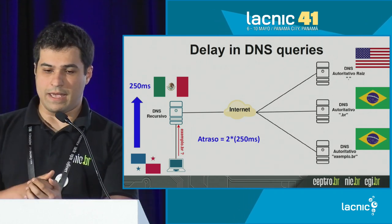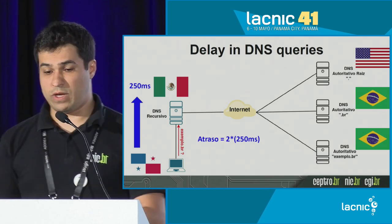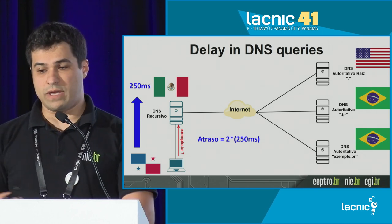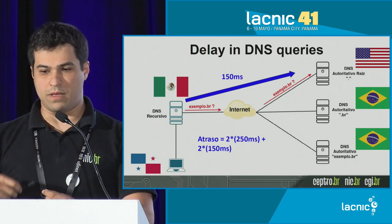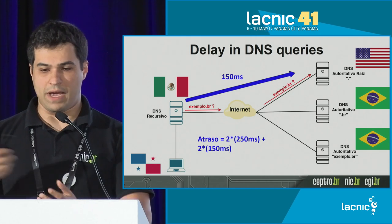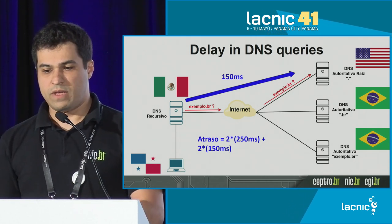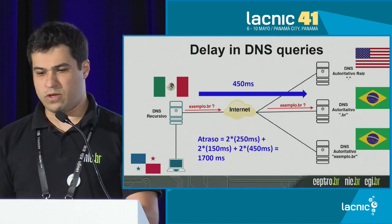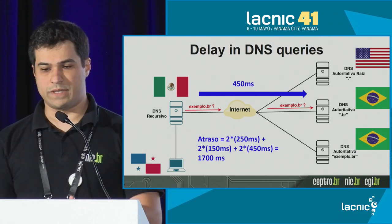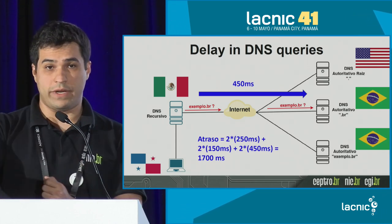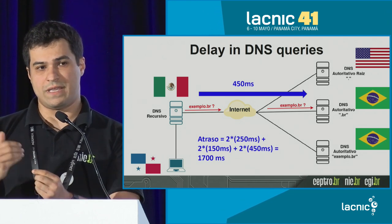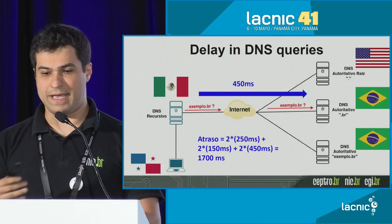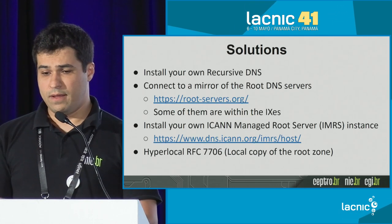If we are in Panama and not using a recursive DNS in this region—using one in another country like Mexico—we have the impact of latency. There's a query and a reply, we multiply this by two. We then go behind the authoritative DNS in the United States to look up the information, increasing latency. Then we look up a website in Brazil at the authoritative DNS in Brazil, which further increases latency. This increases the delay of the first connection and the download of content, and the farther away we are from the machines, the stronger the impact on the network.